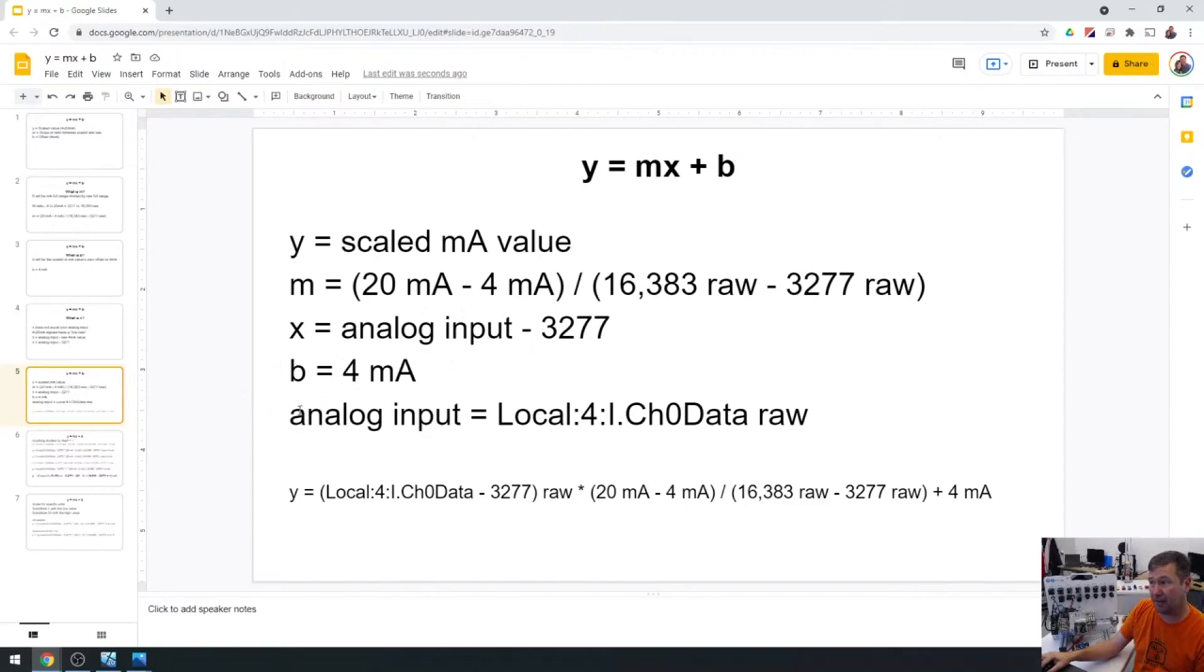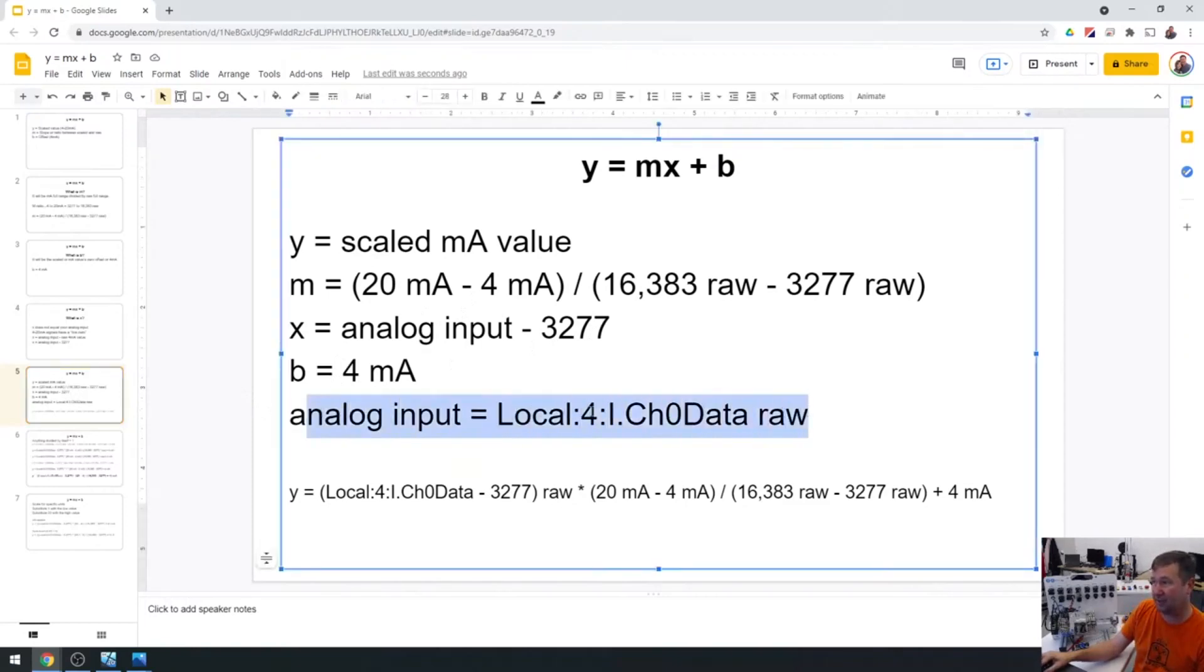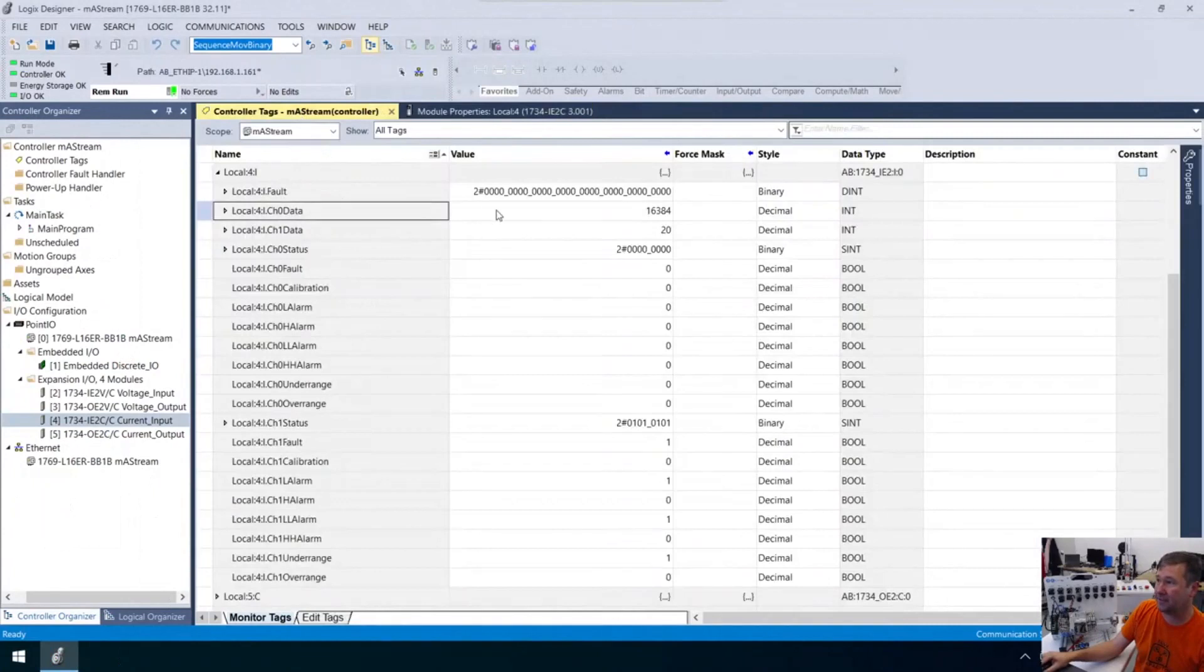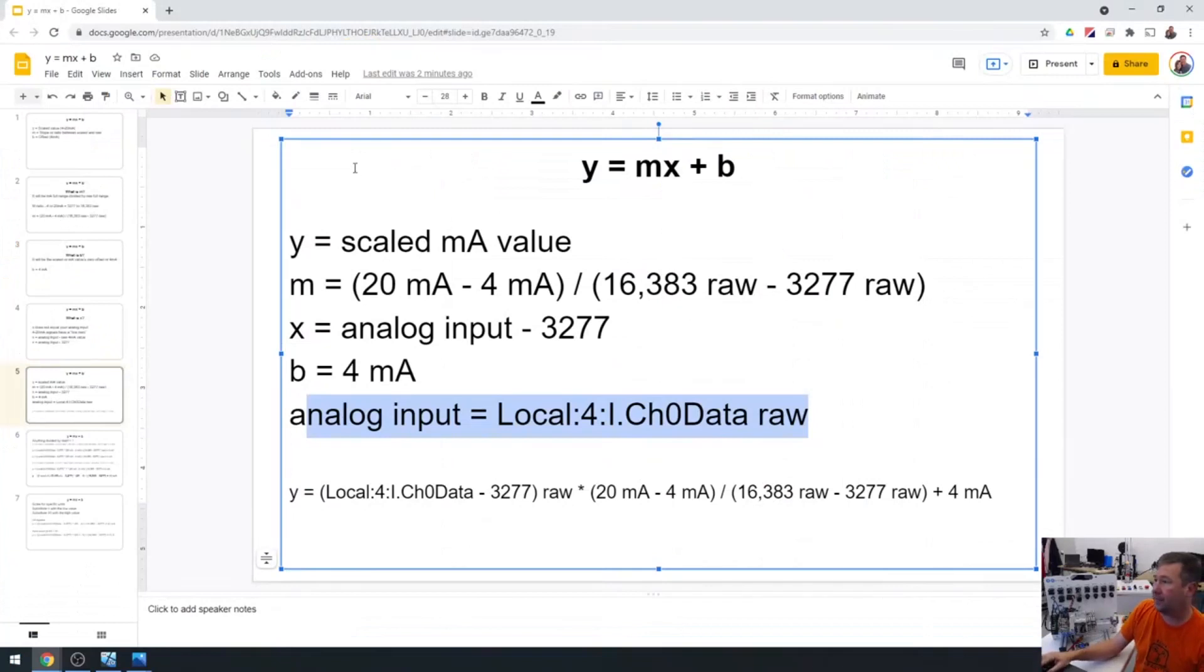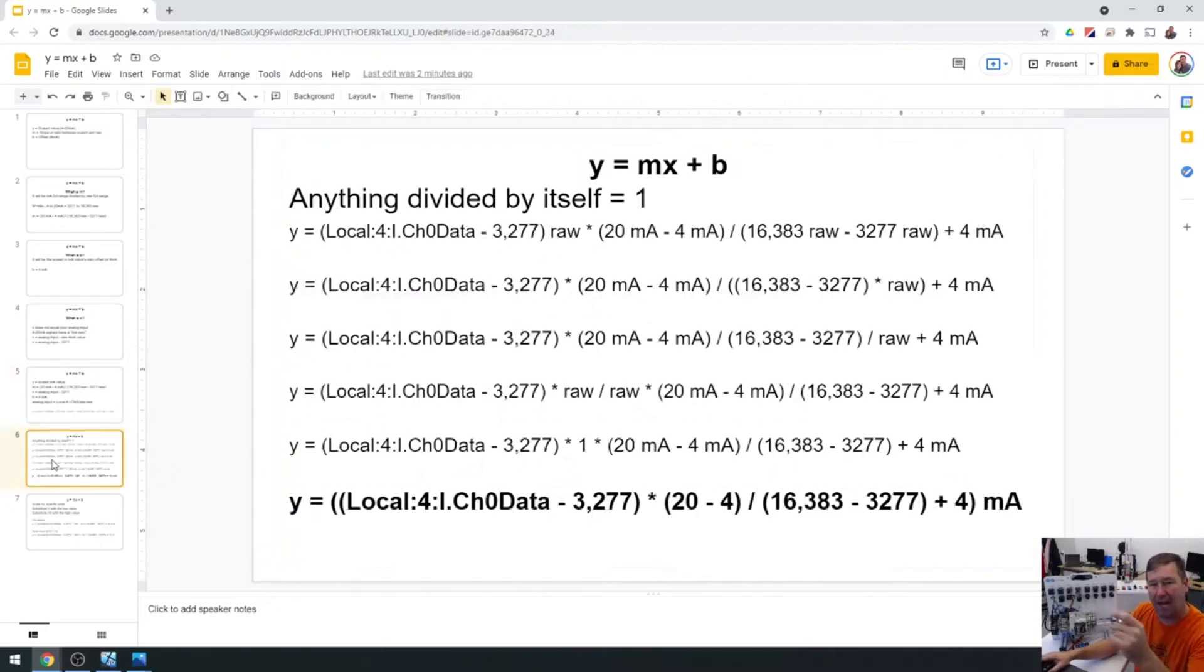Now the X is going to be the analog input minus 3277. Now what is the analog input right here? That's where this is going to come in. Our analog input is that local colon four colon I channel zero. Let's make sure we see that is what we found our value going at right here. So with all that, that means that Y equals the local colon four colon I channel zero minus that 3277 to get rid of that live zero.